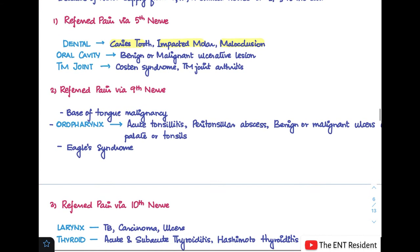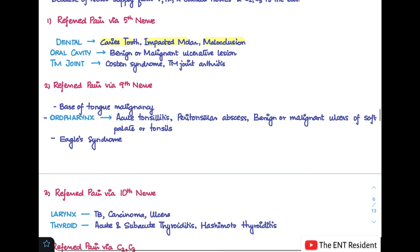Next is referred pain via the 9th cranial nerve. The 9th cranial nerve supplies the base of tongue as well, so in case of base of tongue malignancy there can be referred pain in the ear. Oropharyngeal causes like acute tonsillitis, peritonsillar abscess, benign or malignant ulcers of soft palate or tonsils. It is also seen in Eagle syndrome, which is basically when there is an elongated styloid process that compresses on the 9th cranial nerve and hence causes referred pain to the ear.